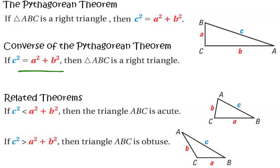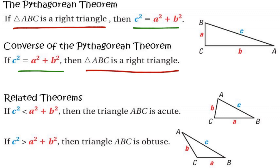You might think that's saying the exact same thing — it's not. Up here, the green statement was after the 'then,' and the green statement in the converse was before 'then' and after 'if.' The red statement up here was 'if triangle ABC is a right triangle.' The red statement down here follows the 'then.' So our if and then statements have been reversed, and that is basically what a converse theorem states: if you reverse the if and then statements and it is still true, then you've got a new theorem — the converse of that theorem.